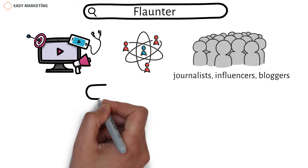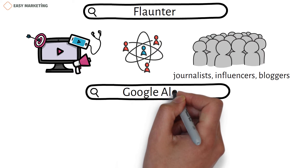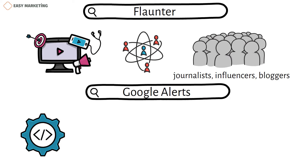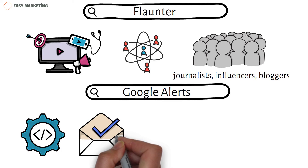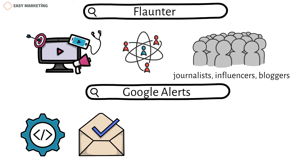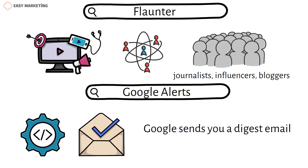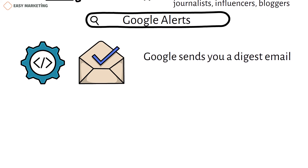Google Alerts. You may set up email alerts for certain keyword mentions with Google Alerts, a simple and free application. Google sends you a digest email to let you know when a name, keyword, or link is mentioned online.